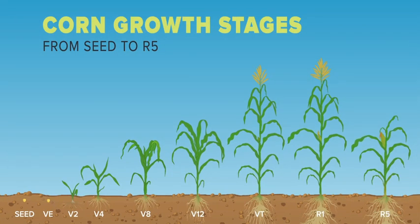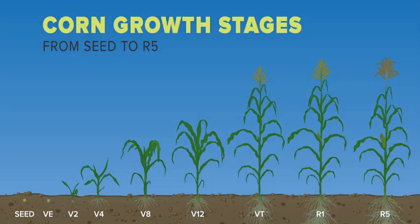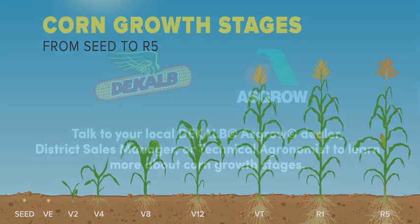Grain fill is the last set of stages of the corn growth cycle. While the number of kernels has already been determined in earlier stages, the size of the kernels is set during grain fill stages.